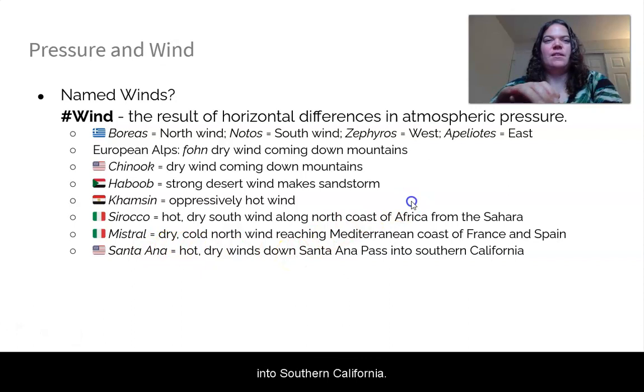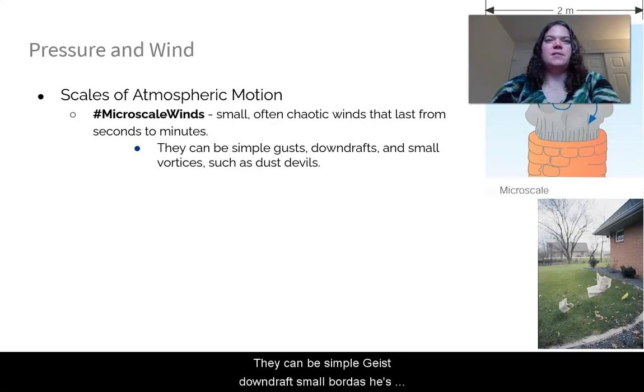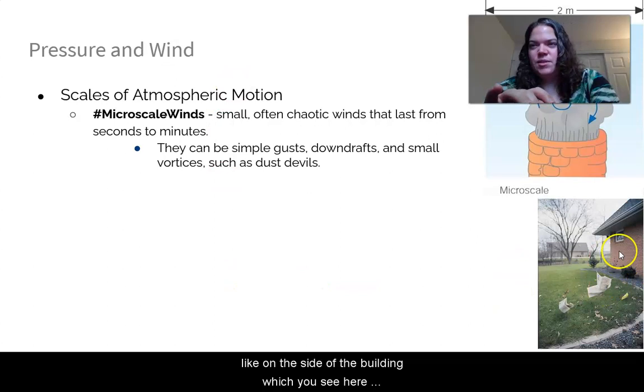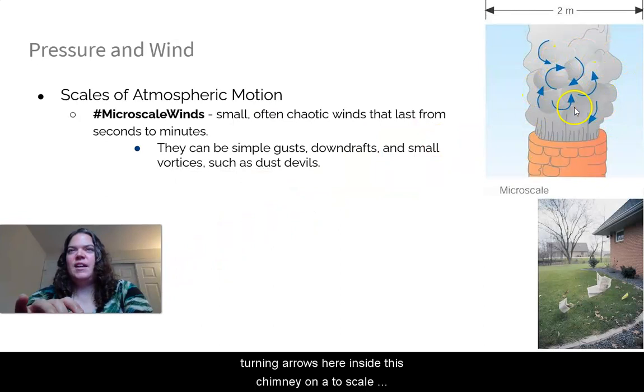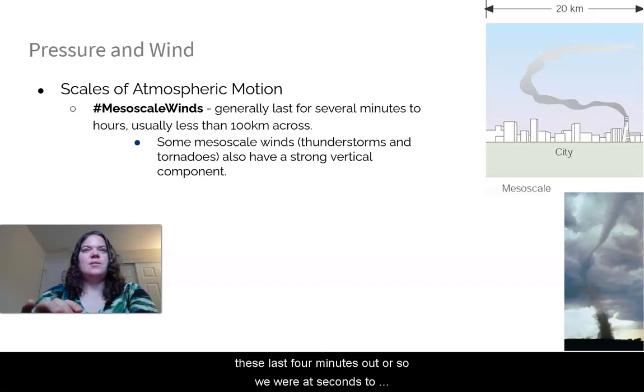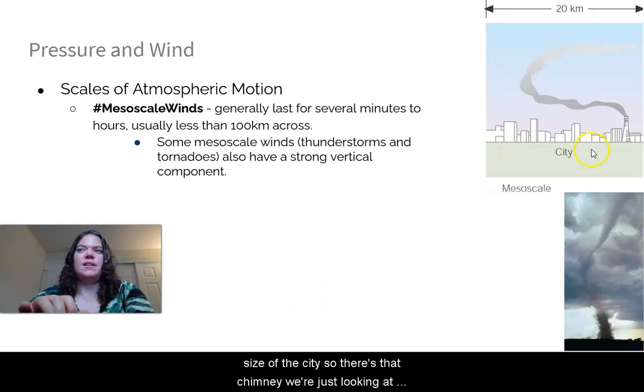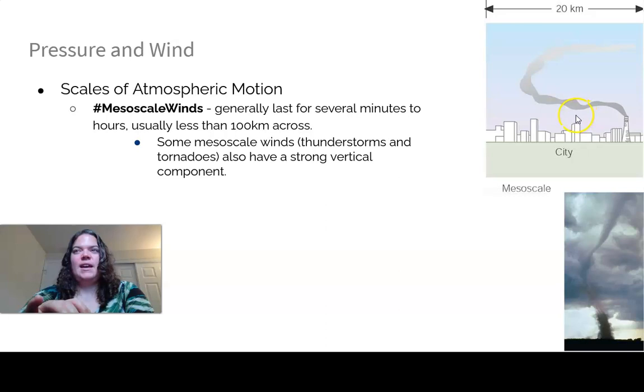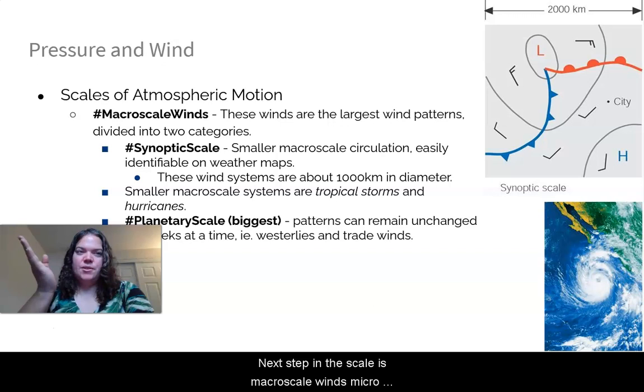So let's do scales of motion really quickly. First, we have microscale winds. These are small, chaotic winds that last from seconds to minutes. They can be simple gusts, downdrafts, small vortices, like on the side of a building, which you see here, and dust devils. So we see these little turning arrows here inside this chimney on a two meter scale. That's considered a microscale wind. Then as I move up in the scale, I reach mesoscale winds. These last for minutes to hours. So this is usually less than 100 kilometers across. So we're talking about the size of a city. So there's that chimney we were just looking at. And now it's inside the whole city. So we zoomed out. And some mesoscale winds include thunderstorms and tornadoes. And usually they have a strong vertical component to them.